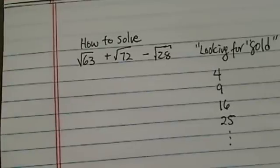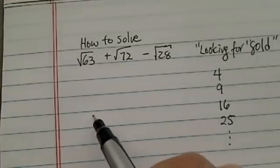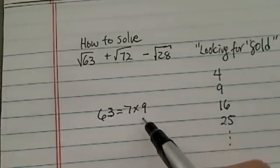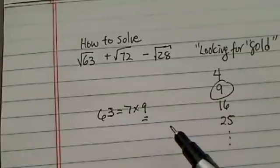So for 63, let's write 63 over here. 63 equal to 7 times 9. Voila, there's our gold, because it's a perfect square.